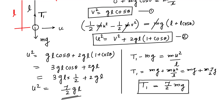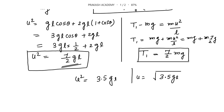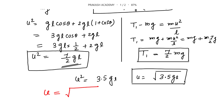So if you give a velocity U such that U² = (7/2)GL — approximately 3.5GL, or U = √(3.5GL) — the string will become slack at an angle of 60 degrees. Now a question for you: if I give a velocity U = √(5GL), what will happen to the string and where will it become slack? Do this calculation and discuss in the comment box.